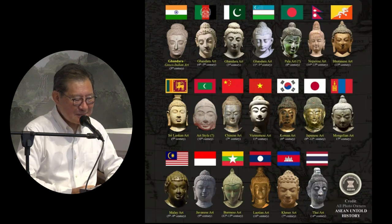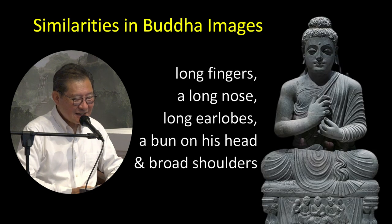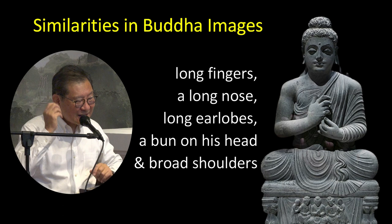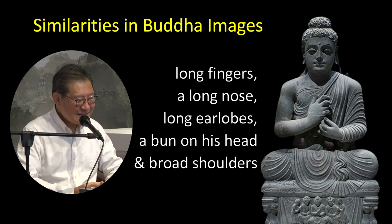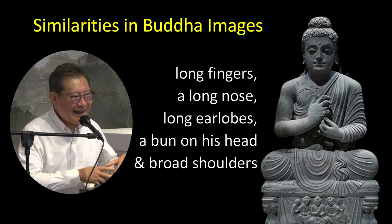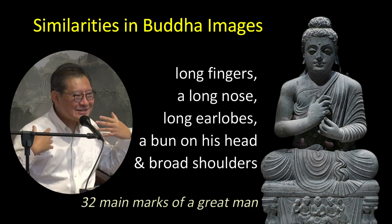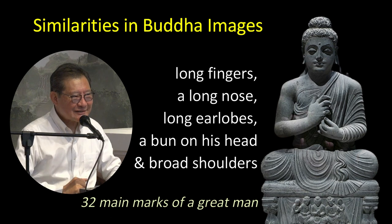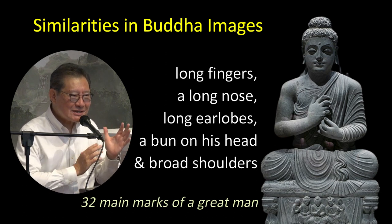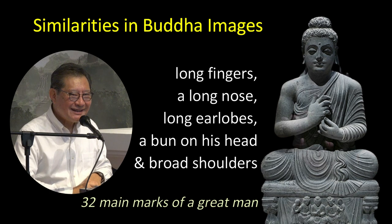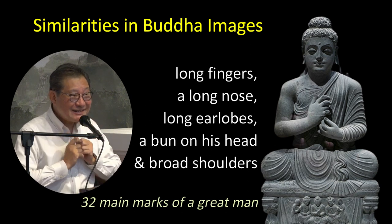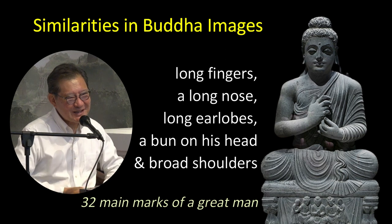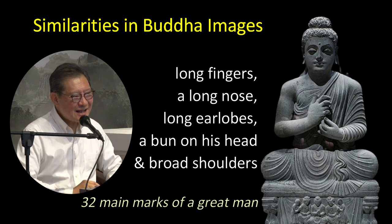For instance, the Buddha is represented with long fingers, a long nose, long earlobes, and a bun on the head with broad shoulders. These are based on the 32 marks of a great man — the characteristics of a great man, of which there are 32. They like to incorporate these characteristics into the image of the Buddha. So although the Buddha might look very different when you go to China versus other regions, some features are really the same.